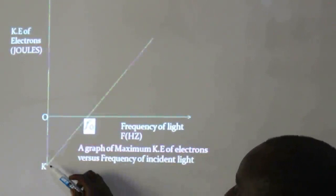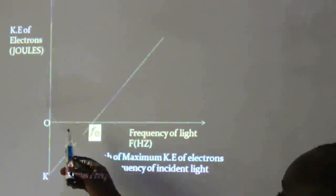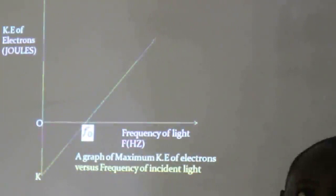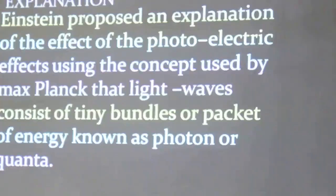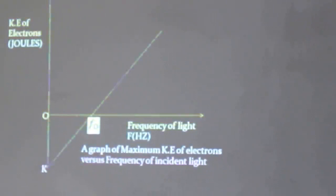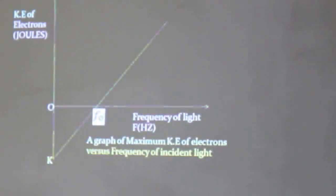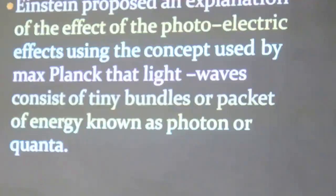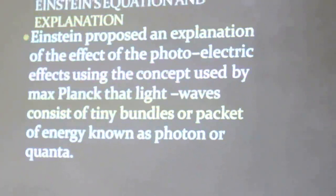From point K to O refers to what we call the work function, while from point O to F naught refers to what we call the threshold frequency. At the end of his research, he discovered that the kinetic energy of any electrons emitted on the surface of a metal depends directly on the frequency or the wavelength of the light rays that falls on it.